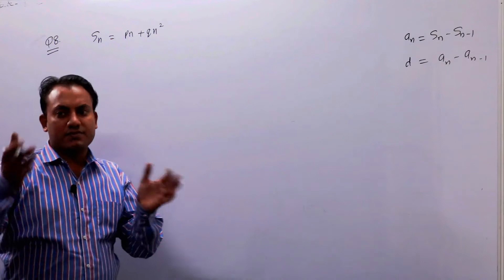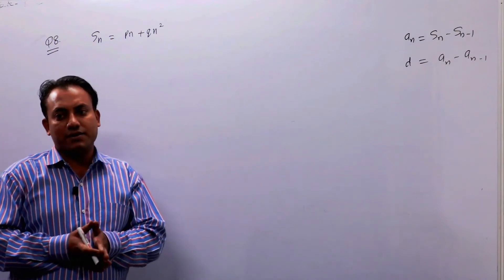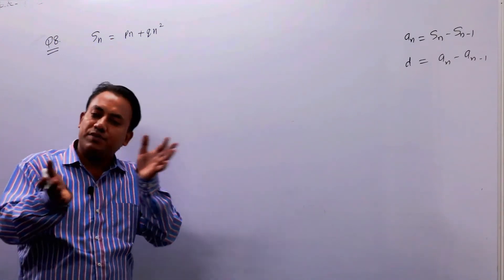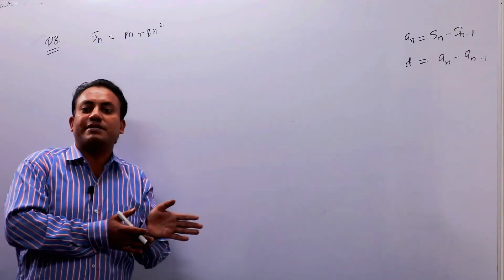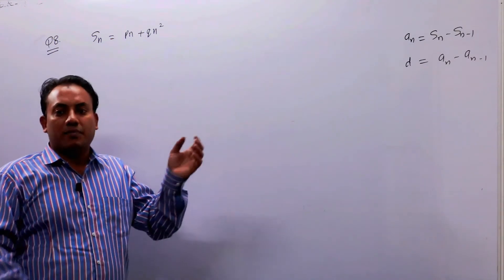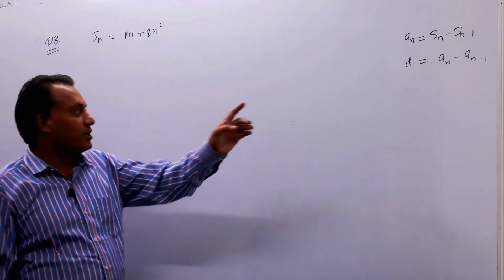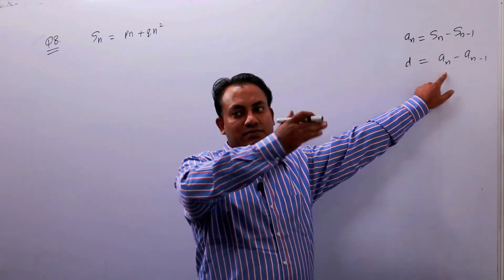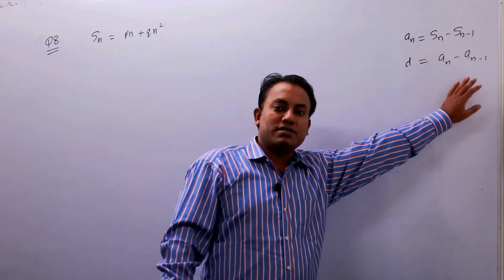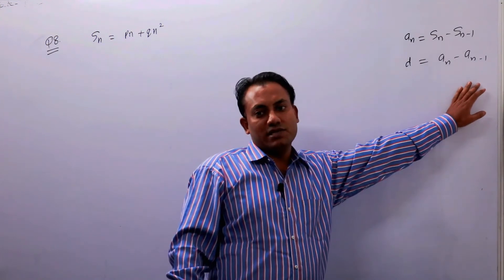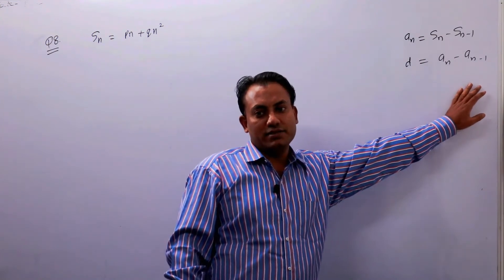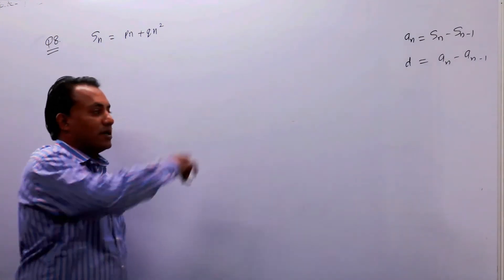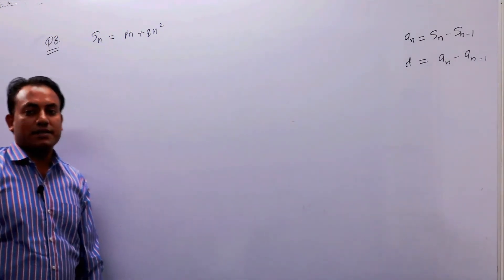Consecutive terms का difference ही तो होता है — किसी भी term में से preceding term को minus करने पर मिलता है। देखो, an है; an में से उससे पहले वाली term a(n-1) minus कर दीजिए, तो common difference मिल जाएगा। यह general formula है common difference के लिए।